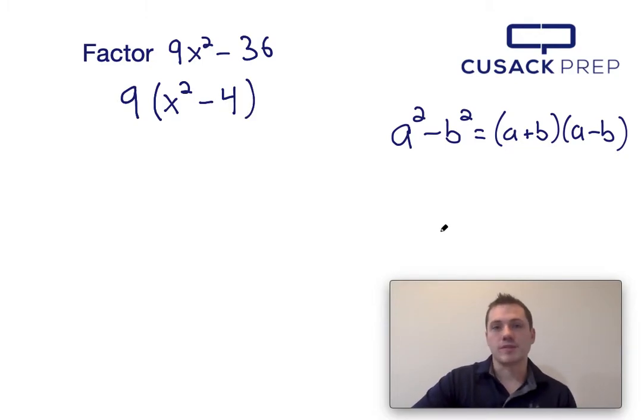Once I factor out a 9 from both terms, I see that x² - 4 is the difference of squares, and I can factor it using the difference of squares formula, which I've presented down here.